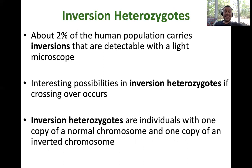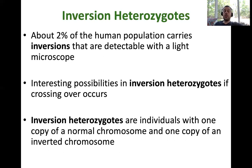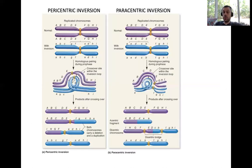Weird things tend to happen if you have an inversion on one of your two chromosomes. For example, with chromosome 1 — you've got two copies, one from mom and one from dad. If you inherited an inversion from your father, then you are what is called an inversion heterozygote, because your mom's chromosome 1 does not contain an inversion and your dad's does. Weird things can happen in meiosis when the chromosomes line up for recombination if you have an inversion.